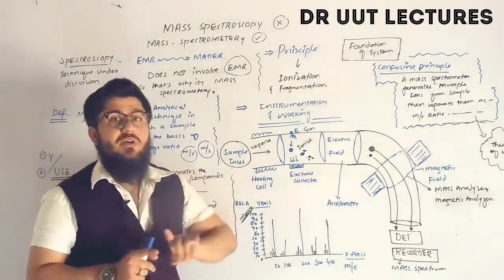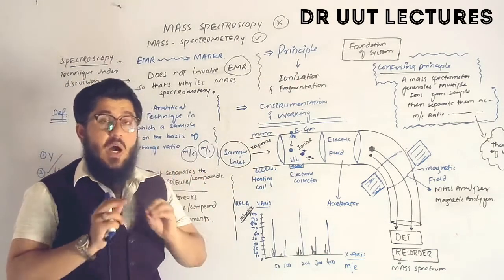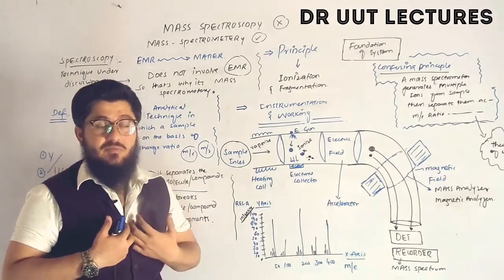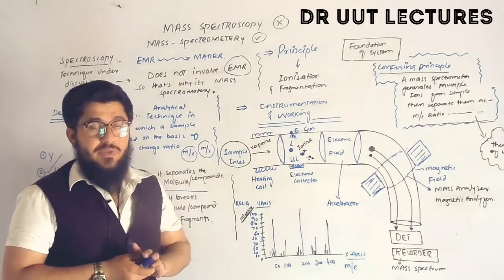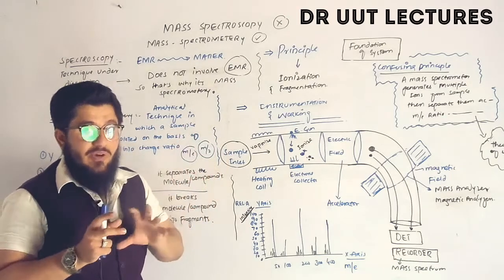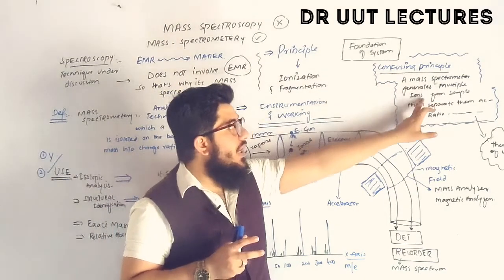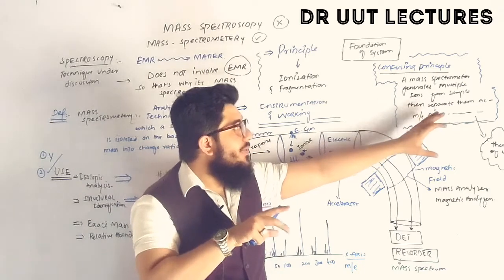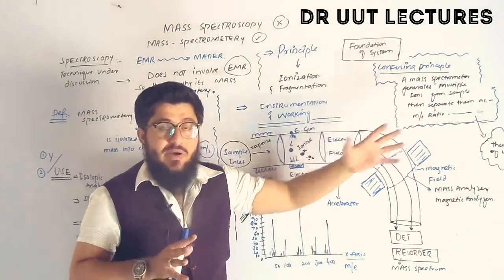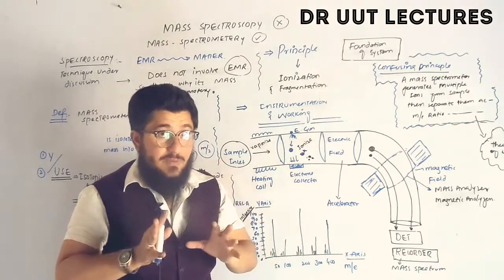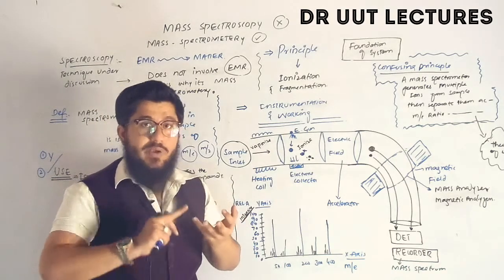The next point is the principle of mass spectrometry, which is often a source of confusion for students. The principle commonly given by mentors — that a mass spectrometer generates multiple ions and separates them by mass-to-charge ratio — can be confusing. The principle I'm going to explain will be logical and to the point.